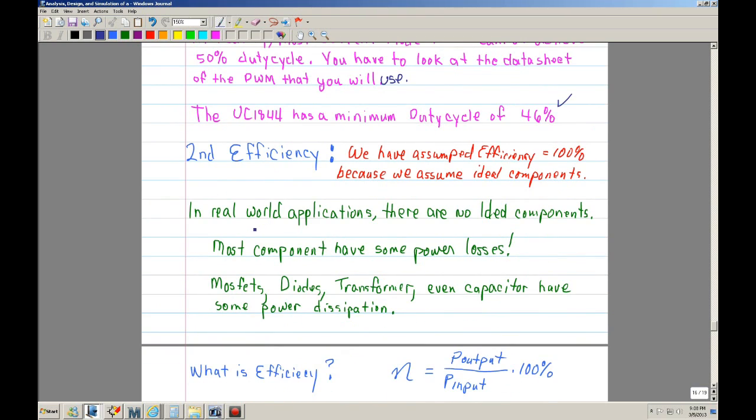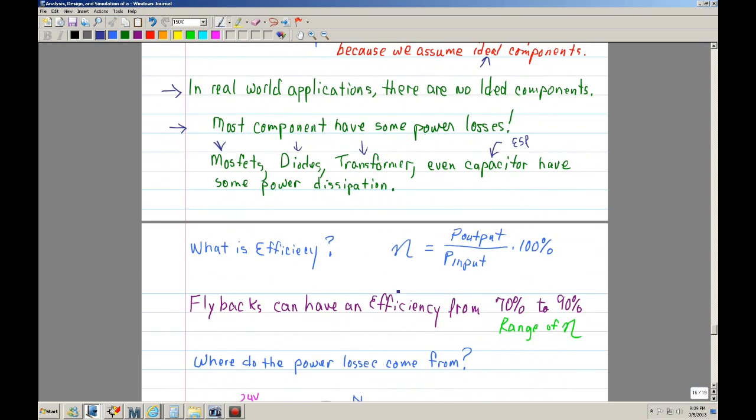The other assumption that we have made is that we assumed the efficiency is 100%. We did this because we assumed we're using ideal components. Now, in real world applications, there are no ideal components. All components have some kind of power losses. MOSFETs have power losses because of the RDS on. The diodes have power losses, conductive losses. Even the transformer has conduction losses because of the resistance of the wire, and also proximity losses and core losses. Even capacitors have losses due to the ESR, or the equivalent series resistor, that are in series with them.